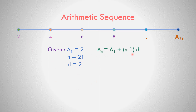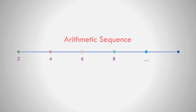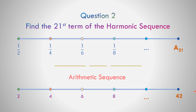Using the formula for arithmetic sequence: A sub n = A sub 1 + (n − 1) × d. So A sub 21 = 2 + (21 − 1) × 2 = 2 + 20 × 2 = 2 + 40 = 42. The harmonic sequence is the reciprocal of the arithmetic, so the 21st term of the harmonic sequence is 1/42.